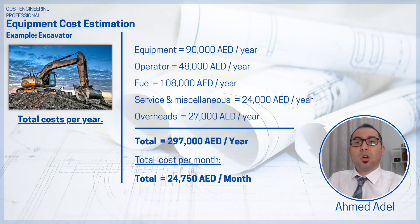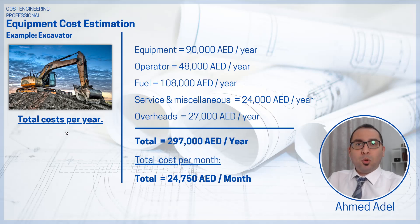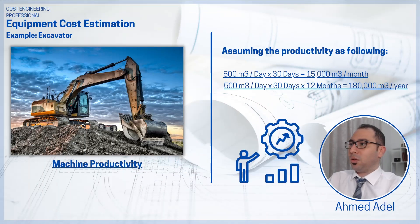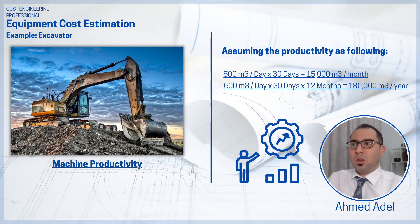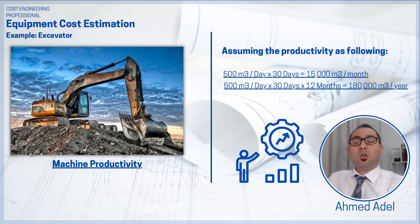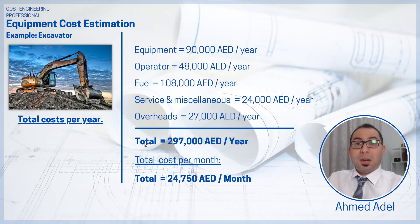Now I need to determine the machine productivity. I'll assume the excavator produces 500 cubic meters per day. Multiplied by 30 days per month, that's 15,000 cubic meters per month. Multiplied by 12 months, the annual productivity is 180,000 cubic meters of excavation. To estimate equipment cost, you need two things: total cost per unit of time and productivity in the relevant unit of measurement.